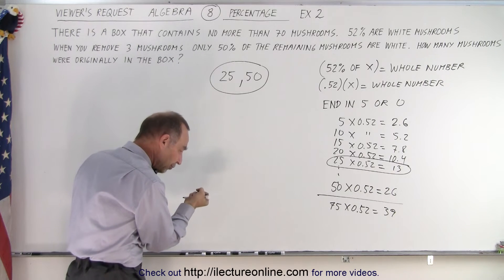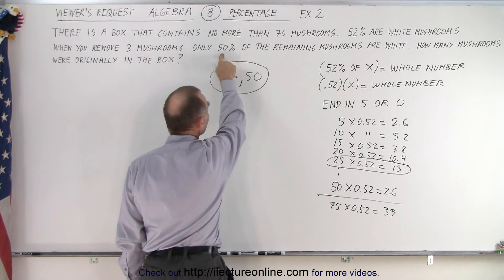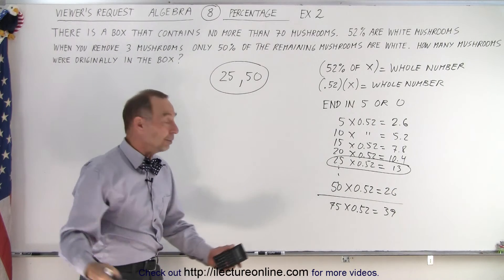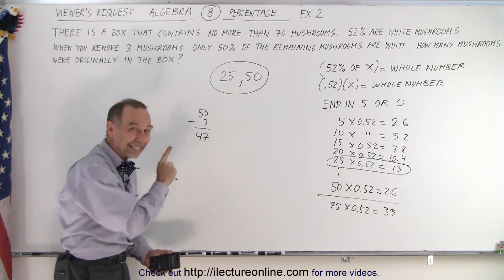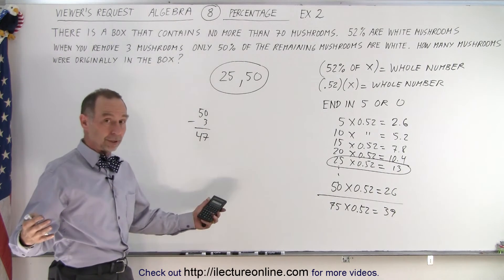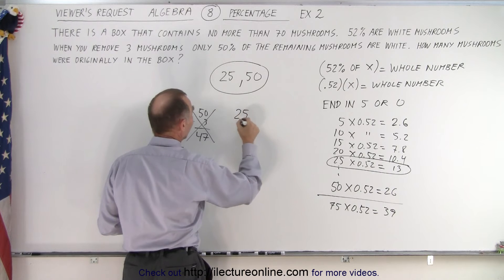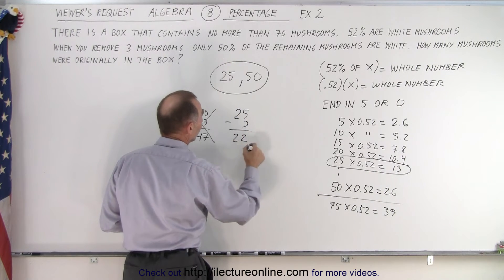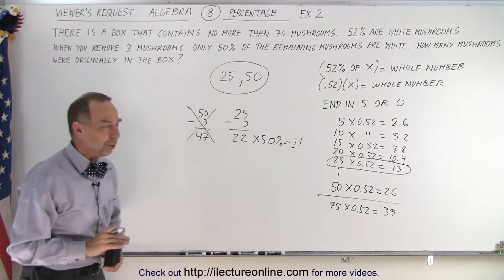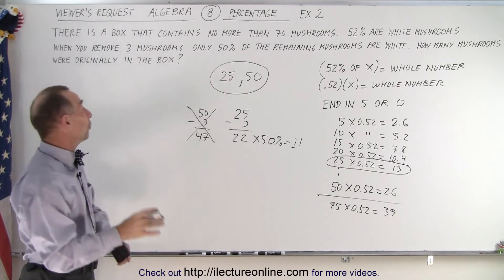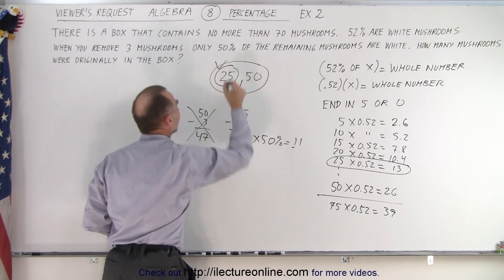Remember what I said: if you remove three of the mushrooms, whatever number you end up with, then you take 50% of that number and that should be a whole number as well. So for example if I take 50 minus 3, which is 47, there's no way that I can take 50% of that remainder and get a whole number. So 50 is not a possibility. The only possibility left is 25 mushrooms. If I take 25 minus 3, that gives me 22, and times 50%, that gives me 11. So that gives me a whole number. So how many were originally in the box? It must be 25, so 25 is the correct answer.